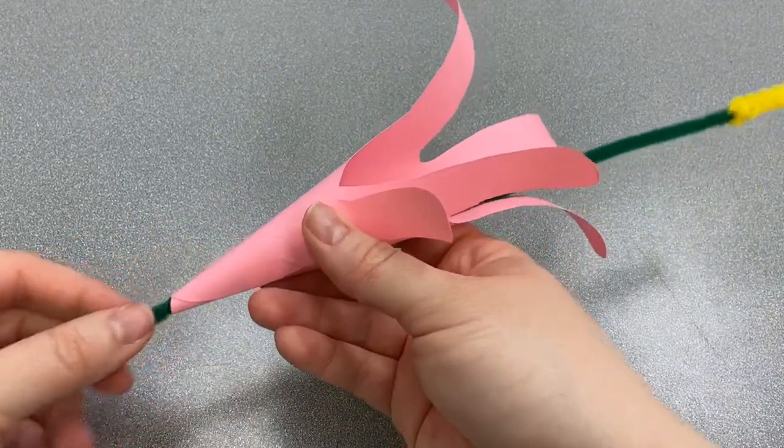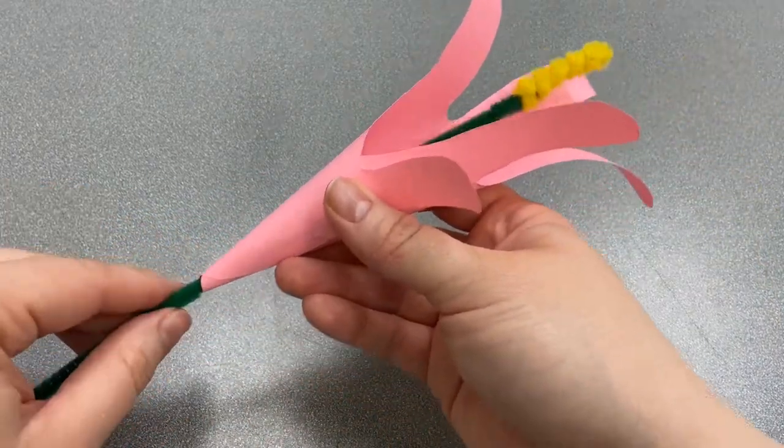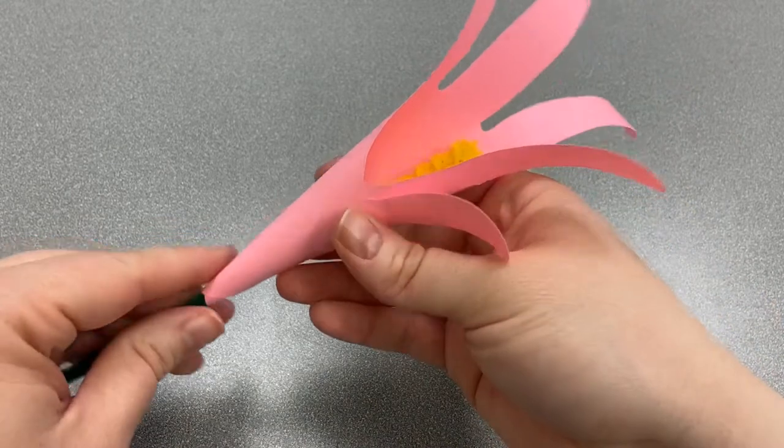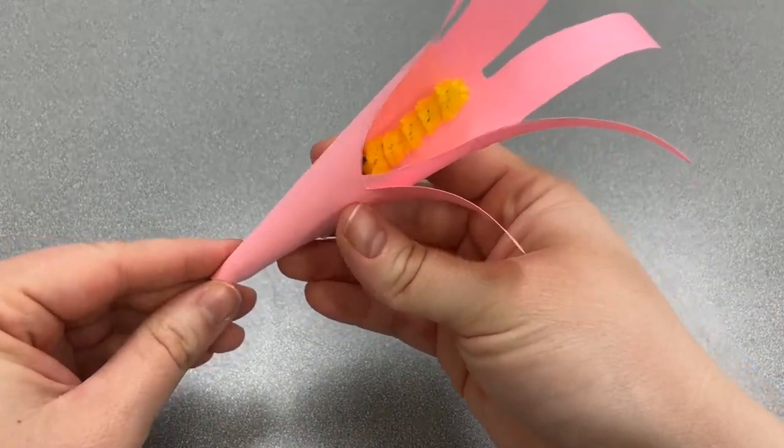And pull it through until the yellow part is showing inside of the flower.